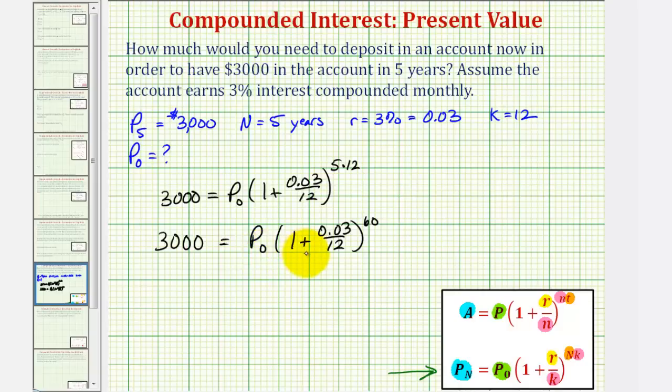We want to solve this equation for P sub zero. We do have to be careful about rounding errors when solving equations like this. What we don't want to do is get a decimal approximation for the sum and then raise it to the 60th power, because it would produce a rounding error. Let's go ahead and leave it in this form and solve for P sub zero by dividing both sides of the equation by the sum raised to the 60th power.